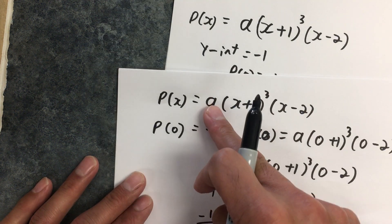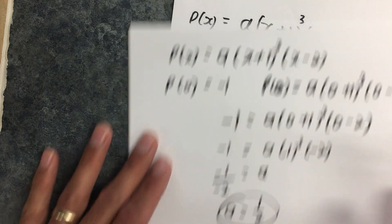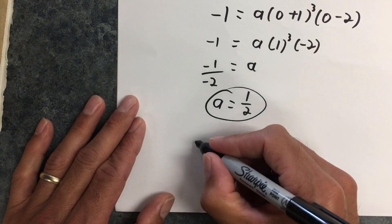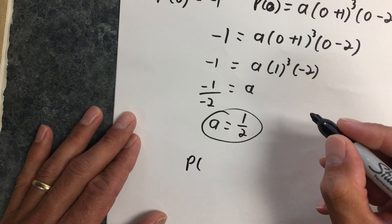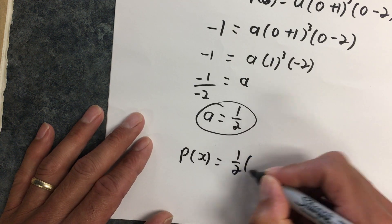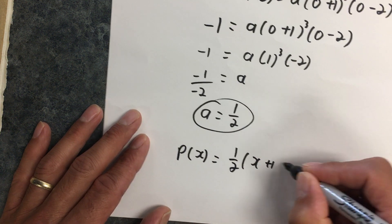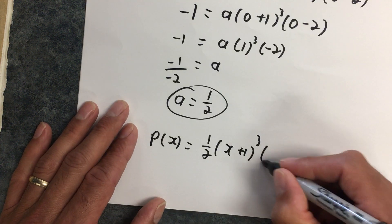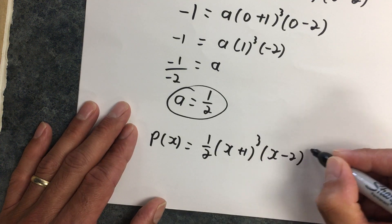I now know the value of my leading coefficient. So I can then write down my equation. My polynomial P(x) is equal to 1/2(x + 1)³(x - 2).